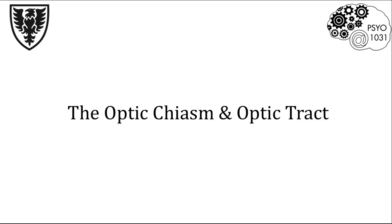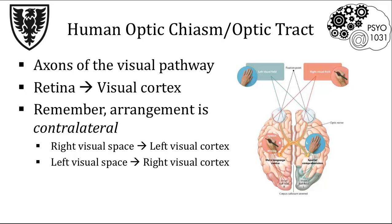On to the optic chiasm and optic tract, two important white matter structures in the visual system. The optic chiasm and the optic tract are white matter components of the long journey from the retina in the eye to the visual cortex.